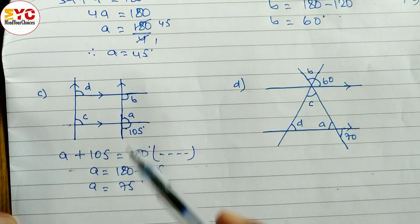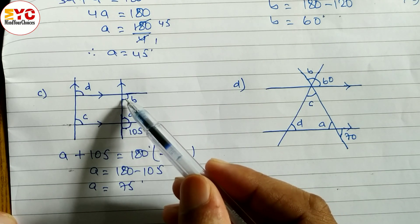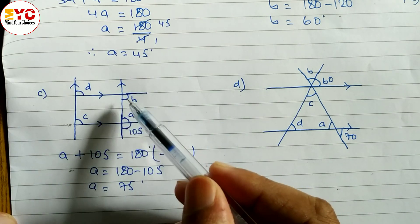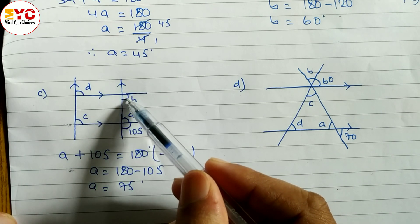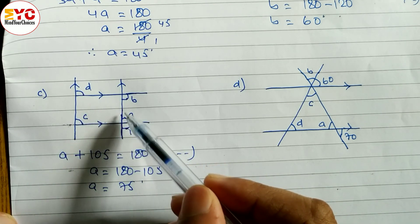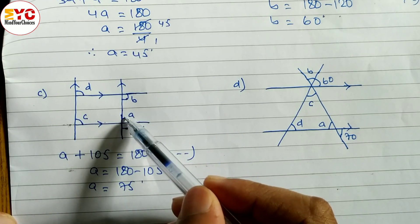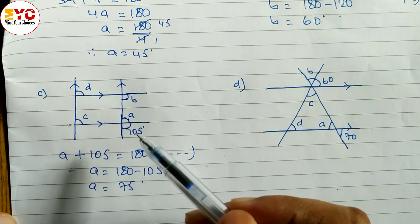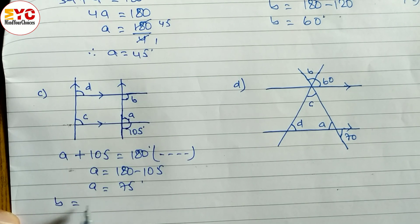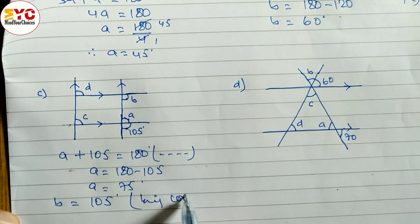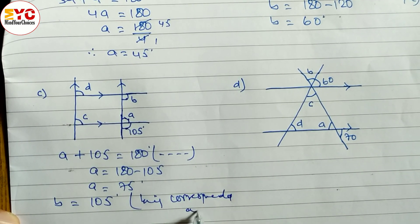Hope you understand this one. Now to find out b: you can write b is equal to 105 directly, being corresponding angle — one is inside, one is outside of the parallel line. Or we can write a plus b is equal to 180 degrees co-interior and put the value of a to get b. So I am going to write directly b is equal to 105. Reason: being corresponding angle.